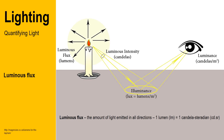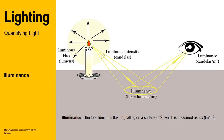The total amount of light emitted in all directions is known as luminous flux. It is the light emitted in all directions and is measured as lumens.